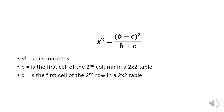For our chi-square test, b is the first cell of the second column in a 2x2 table. For c, that is the first cell of the second row in a 2x2 table.